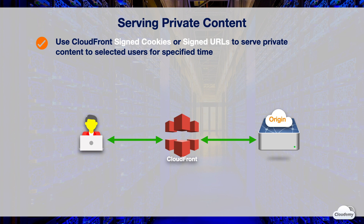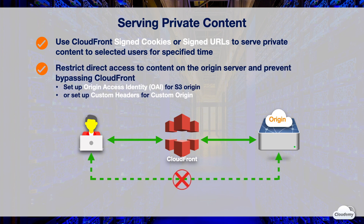For example, you can specify an expiration time in a signed URL to provide time-based access control. You can further restrict direct access on the origin servers and prevent bypassing the restrictions that you specify in signed URLs or cookies. If your origin is an S3 bucket, you can set up Origin Access Identity or OAI and associate it with the CloudFront distribution. If you have a custom origin, you can set up custom headers in the CloudFront distribution. These custom origins can be Amazon EC2, S3 buckets configured as website endpoints, Elastic Load Balancing, and your HTTP web servers.